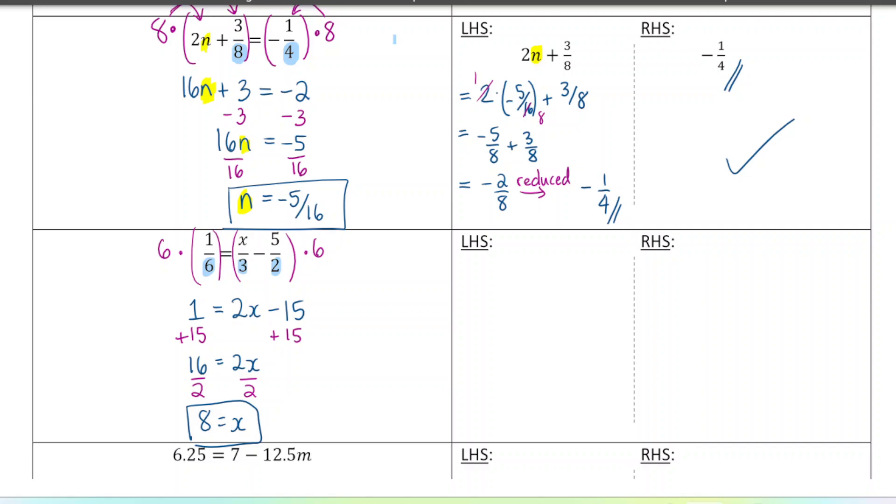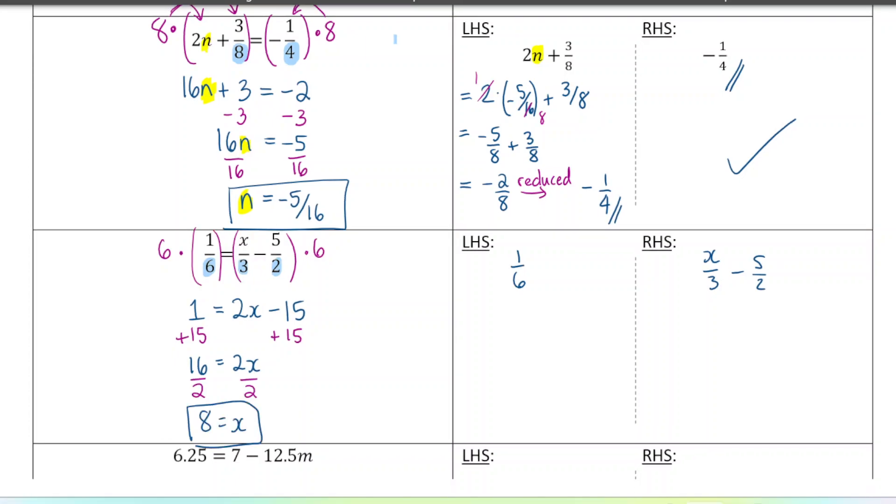Now for verifying, again, if you would like to, you can pause here and try on your own if you'd like. So I'm going to substitute what I think is the solution in for x here. 8 over 3 minus 5 over 2. I'm going to create a common denominator, which is 6. So I'm going to multiply this one by 3 and this one by 2. So I'll get 16 over 6 minus 15 over 6, which is 1 over 6. 1 over 6 is equal to the left-hand side, so I have verified my solution here.